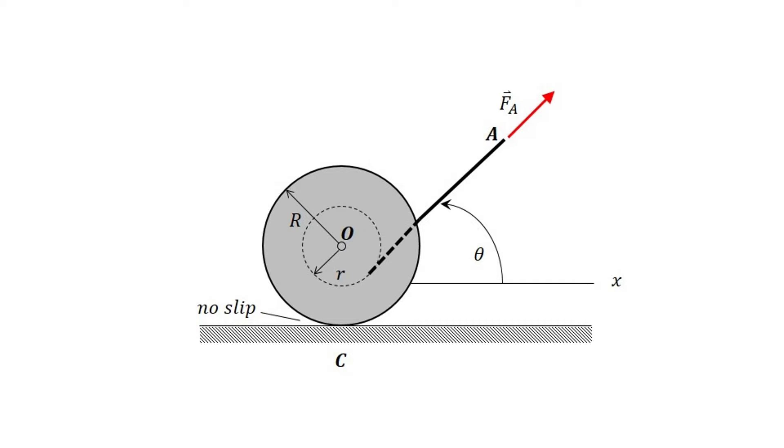A force will also be applied by the string tangent to the inner radius. Pulling at a different angle may change the response of the system. The direction of rotation can be determined by summing moments about point C, as it will eliminate unknown friction. A cross product of the position vector of the application point relative to point C and the force vector will determine this.